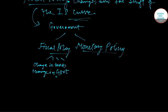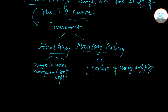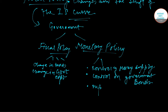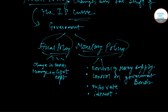In case of monetary policy, the policy instrument which the government has is the control of money supply, control on government bonds, repo rate, and interest rates. So government can undertake any of these two policies according to the demand of the situation.